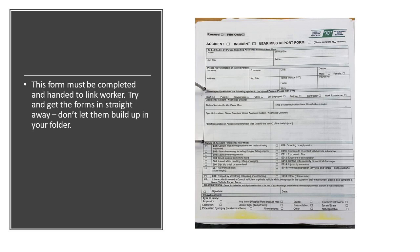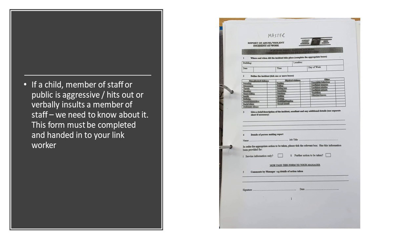There is an accident form which needs to be completed and handed to your link worker whenever an accident happens — these can be minor accidents such as a child tripping while skipping. Any major incidents need to be reported immediately, but for smaller incidents you deal with yourself, complete this form and hand it to your link worker as soon as possible. Don't let them build up in your folder; avoid handing fifteen forms to the link worker at the end of the week.